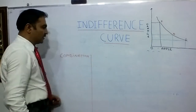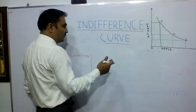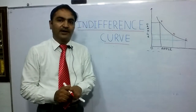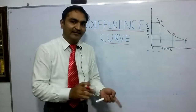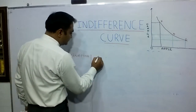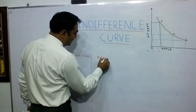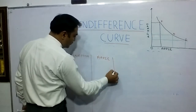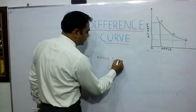We need X commodity and Y commodity. Here X commodity is apple and Y commodity is orange.